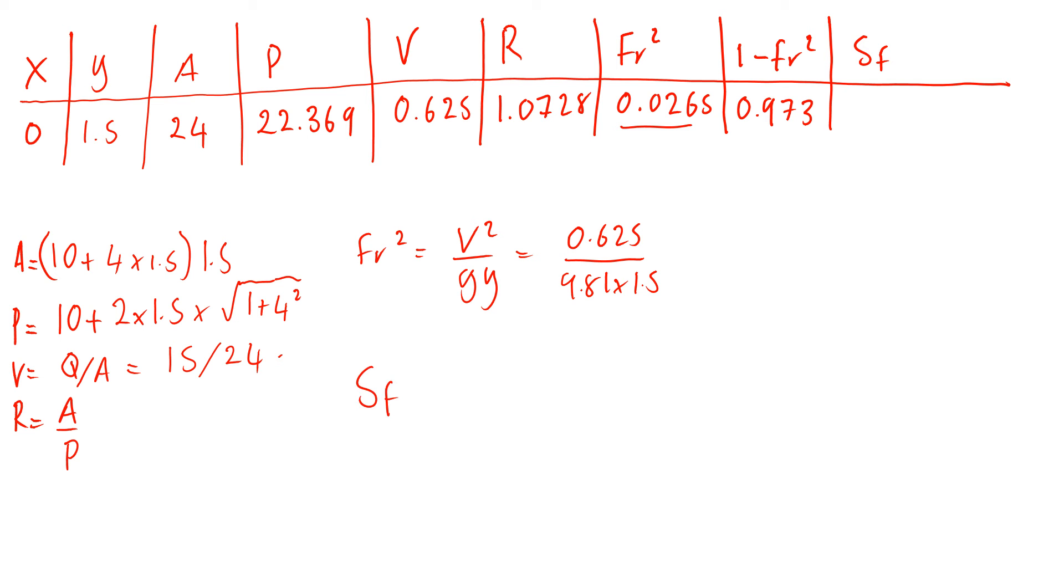Then you calculate Sf. Sf is basically just rearranging Manning's equation. Manning's equation is Q equals (1/n) R^(2/3) S^(1/2) times A. When you rearrange that for Sf, you get Q²n² over R^(4/9) times A². The equation for Sf is Q² times n² divided by R^(4/9) times A².